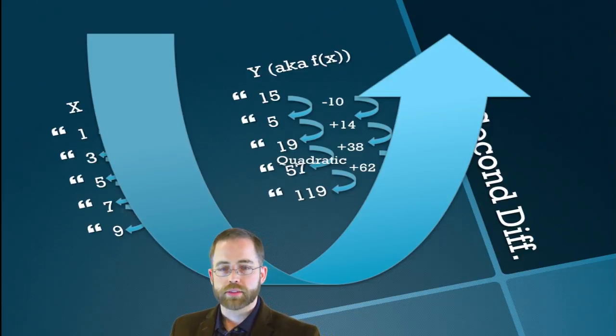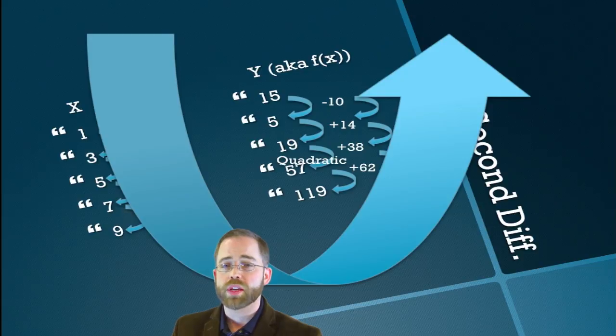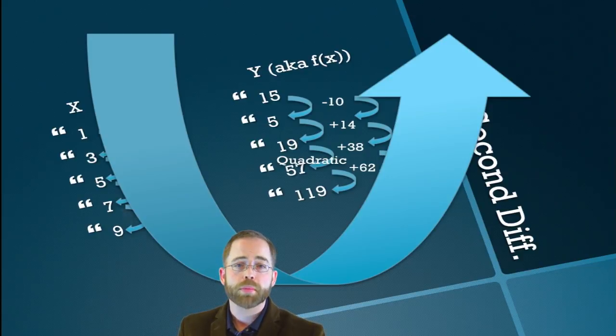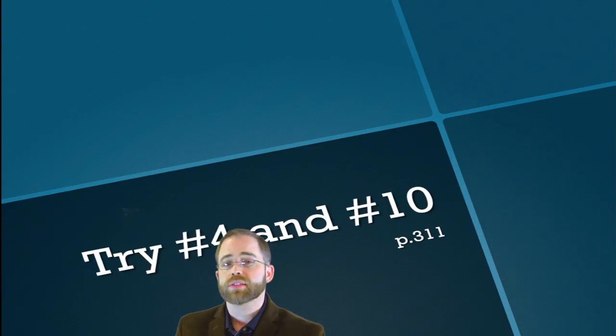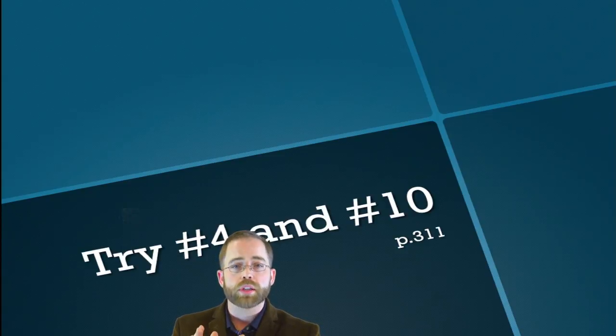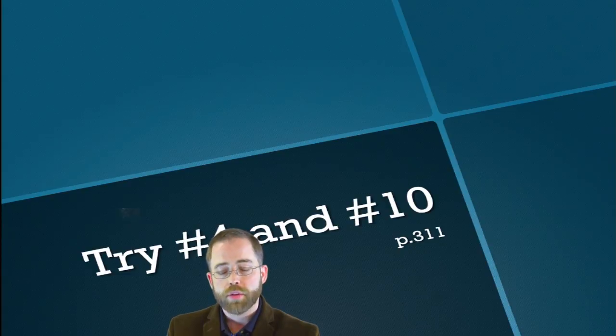So this is a summary now of the four kinds of patterns that we've looked at in this section. There is add-add, there is add-multiply, there is multiply-multiply, and there is add-second-diff. Now if these are a little bit scary for you, you might try doing a couple of the ones from the book. I recommend number 4 and number 10 from page 311. But we will do more in class and I will see you then.